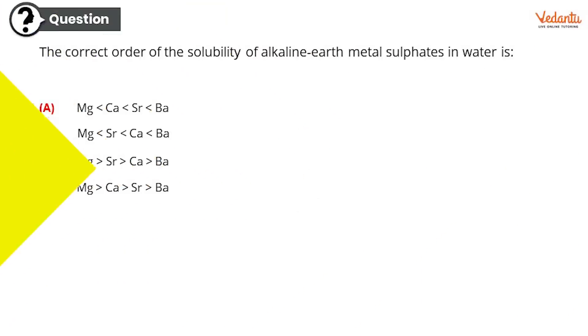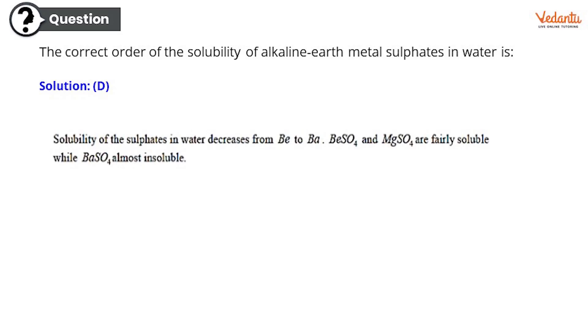So here goes the next question, guys. The correct order of solubility of alkaline earth metal sulfates in water is correct order of solubility of alkaline earth metal sulfates. And here are the options. First option, second option, third and fourth option. You have to choose between them. And here is the correct response. It's D. Magnesium greater than calcium, greater than strontium and greater than barium. And the reason behind is the solubility of sulfate in water decreases from beryllium to barium. Means down the group. I guess we all know this, isn't it?